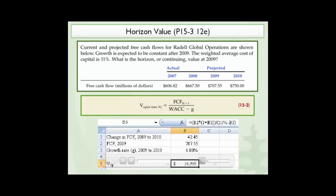And to do that, we enter the 2009 free cash flow times 1 plus the growth rate of 6%. And once we have that, we divide it by the weighted average cost of capital, less the growth rate again. And when we do that, we get $14,999.